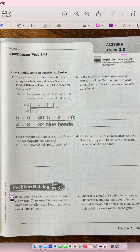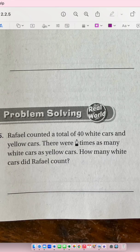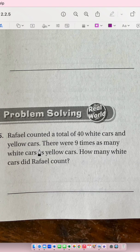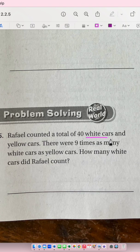Lesson 2.2, number 5. Rafael counted a total of 40 white cars and yellow cars. There were nine times as many white cars as yellow cars. How many white cars did Rafael count?